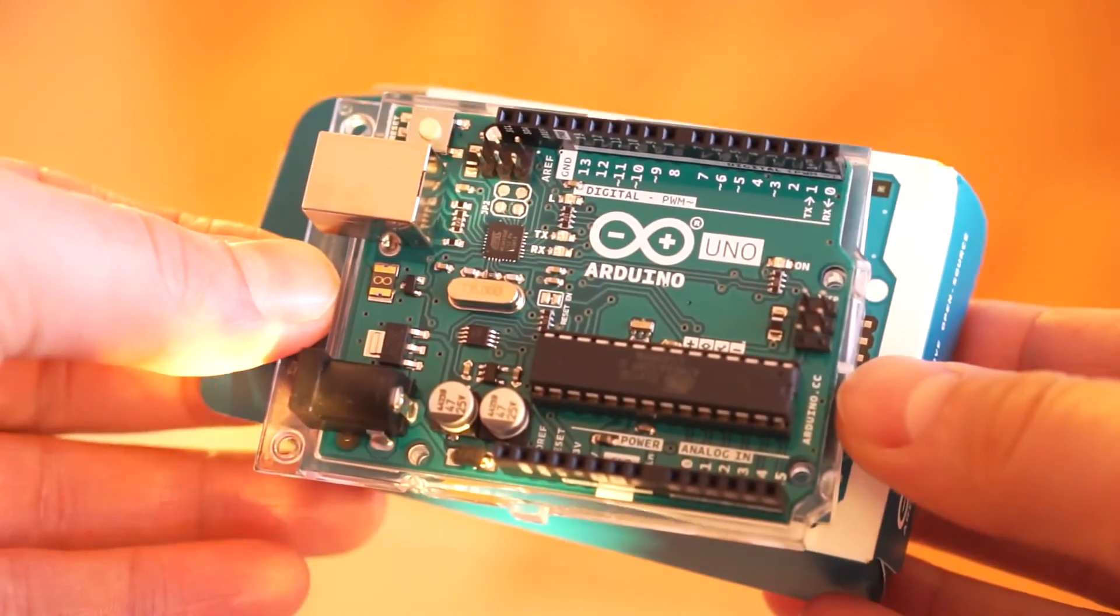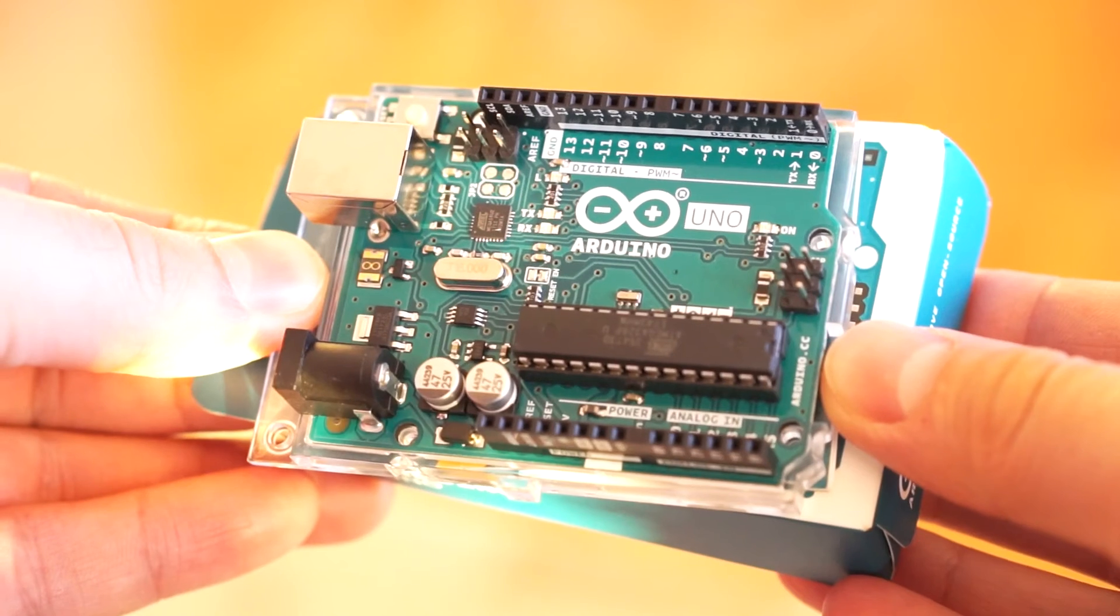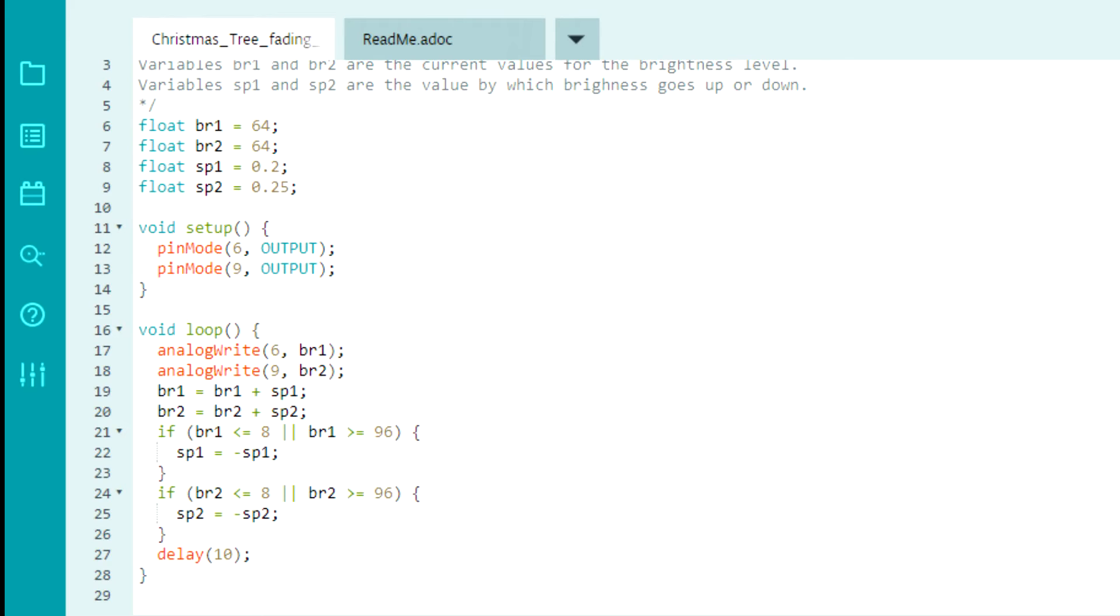While the lacquer was drying, I took out my Arduino board. If you don't know what Arduino is, think of it as a small, low-power and easy-to-program computer. Explaining how an Arduino works is beyond the scope of this video, but here's what my code looks like. It creates a very subtle fade-in and fade-out effect that is slightly different for each LED group.